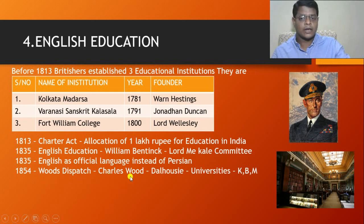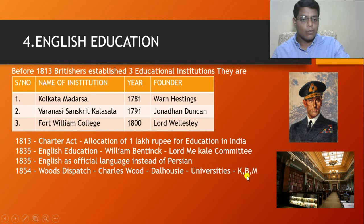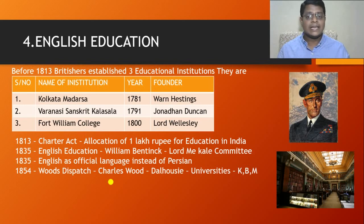Based on the Woods Dispatch recommendations, Governor General Dalhousie established three universities: Kolkata University, Bombay University, and Madras University. During the British colonial rule, the education system developed step by step. People who joined English education schools or colleges went to England for higher education, and at the London Library they studied the writings of Hobbes, Rousseau, Locke, J.S. Mill, and Bentham.